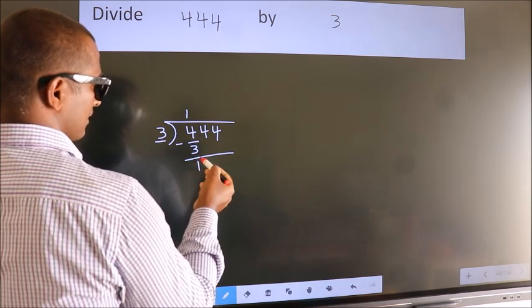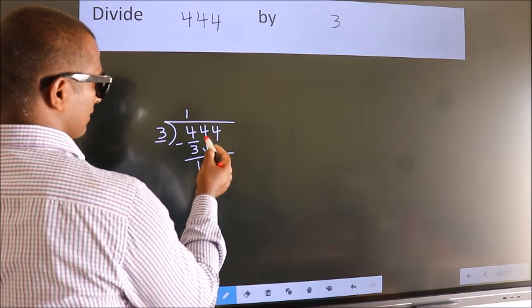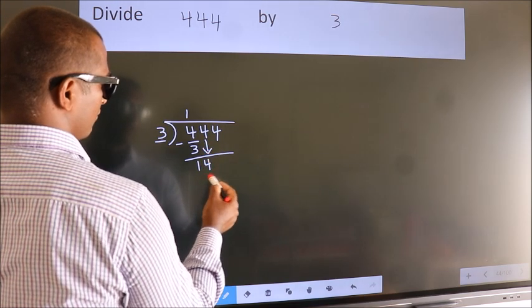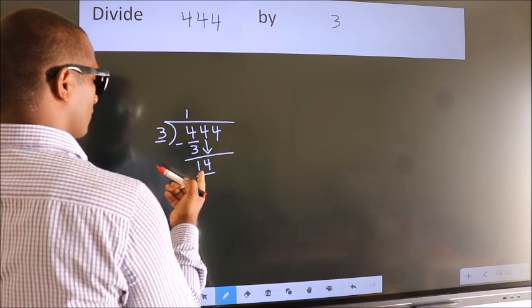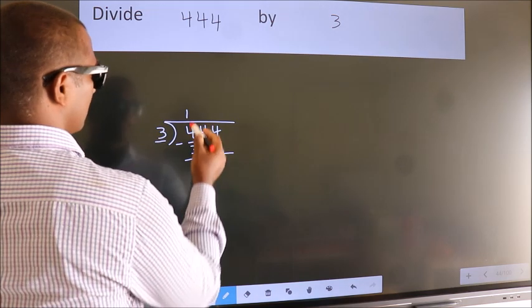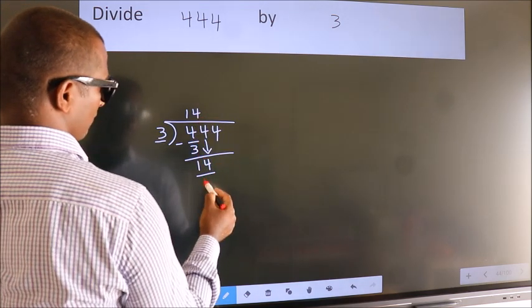After this, bring down the beside number. So, 4 down. So, 14. A number close to 14 in the 3 table is 3 4s 12.